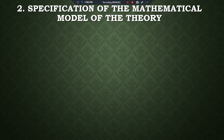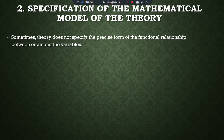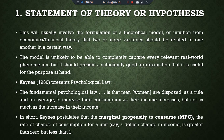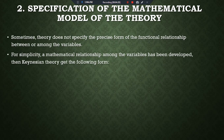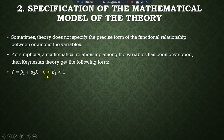After stating the theory or hypothesis, we convert it into mathematical form. The second step is the specification of the mathematical model of the theory. Sometimes a theory does not specify the precise form of the relationship between variables. For simplicity, the mathematical relationship developed gives: Y = β₁ + β₂X, where β₂ is greater than zero but less than one.